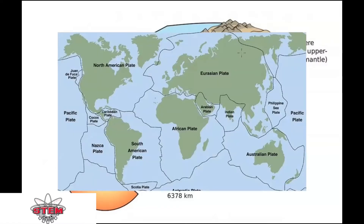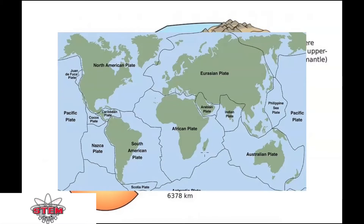These different pieces are called plates, and as you can see in this diagram, plates are what are under all the continents and all the oceans. The layer below the lithosphere is the asthenosphere. The asthenosphere is composed of rocks that are almost like silly putty.